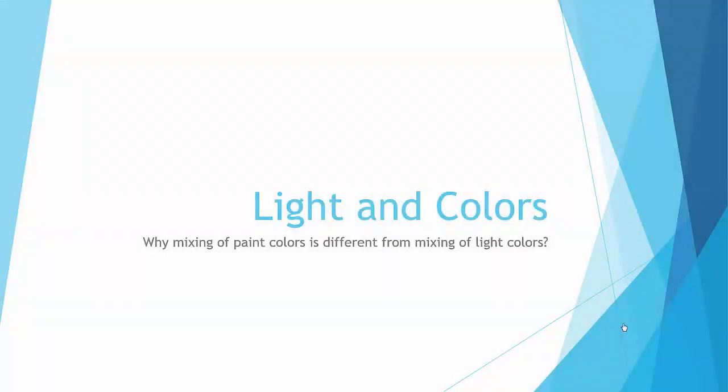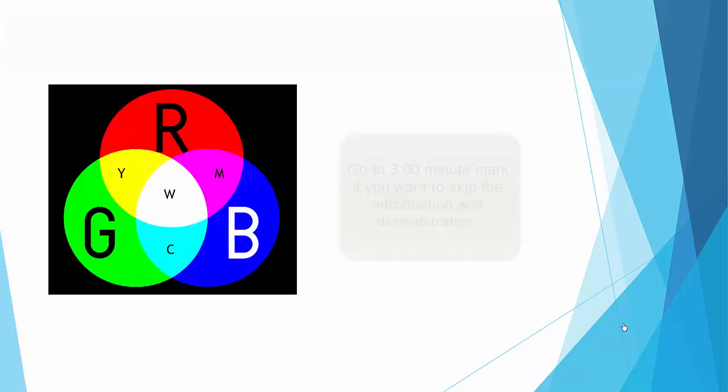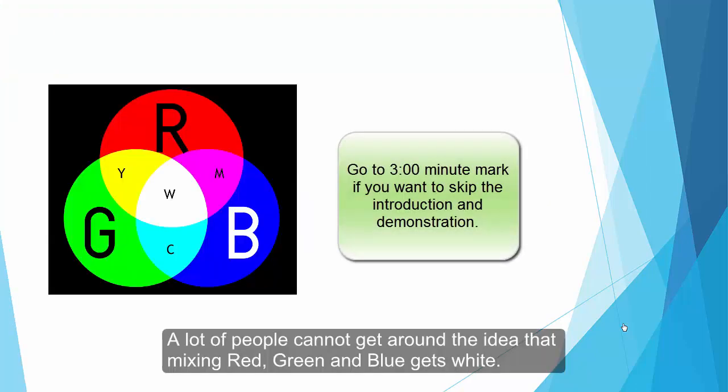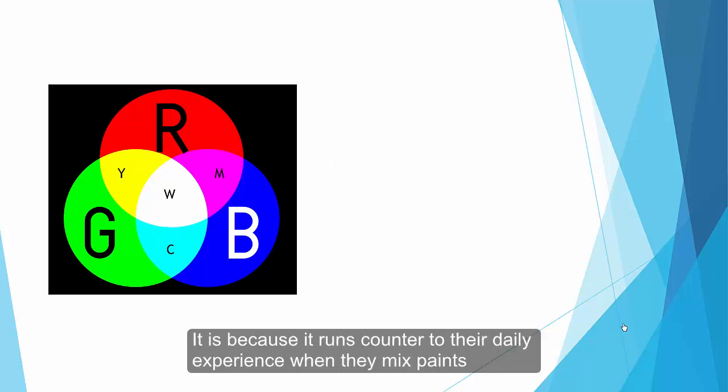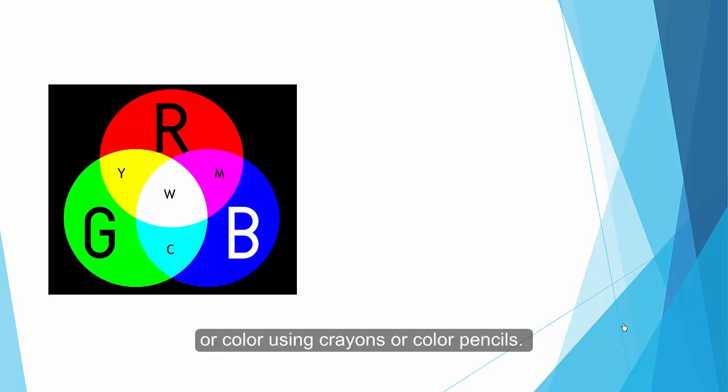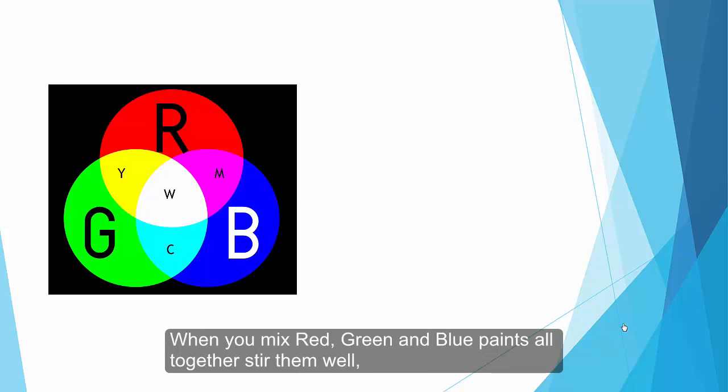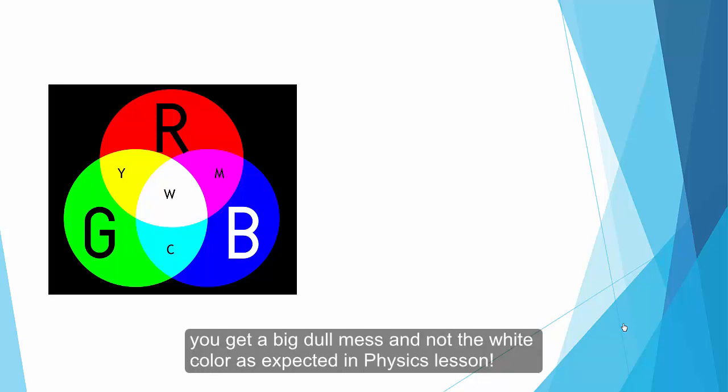In this lesson we're going to explain why mixing of paint colors is different from mixing of light colors. A lot of people cannot get around the idea that mixing red, green and blue gets white. This is because it runs counter to their daily experience when they mix paints of all colors using crayons or color pencils. When you mix red, green and blue paint all together and stir them well, you get a big dull mass and not the white color as expected in physics lessons.